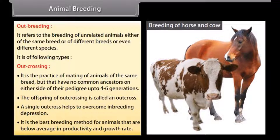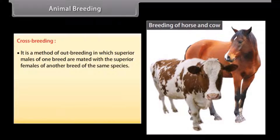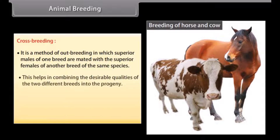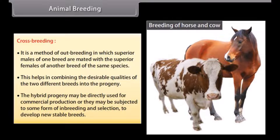Outcrossing is the best breeding method for animals that are below average in productivity and growth rate. Cross breeding is a method of outbreeding in which superior males of one breed are mated with the superior females of another breed of the same species. This helps in combining the desirable qualities of the two different breeds into the progeny.